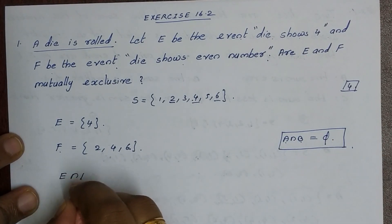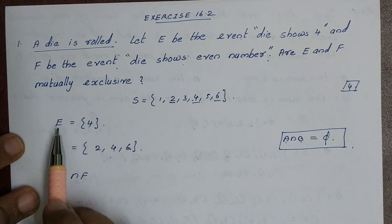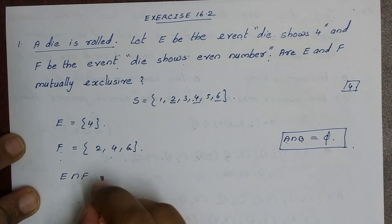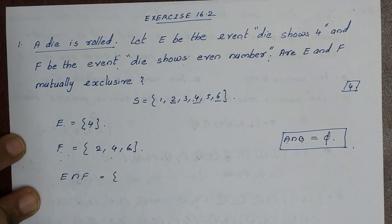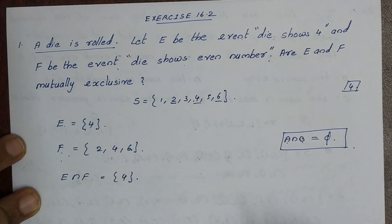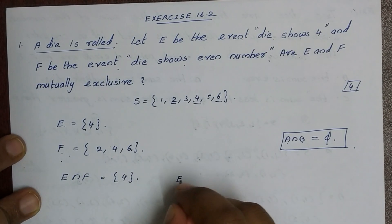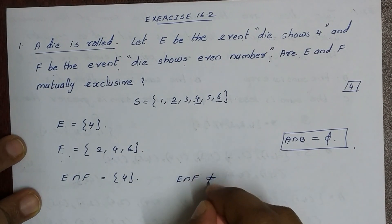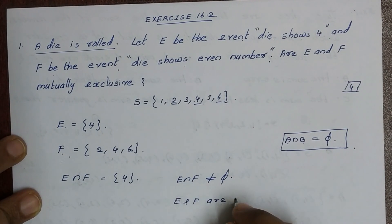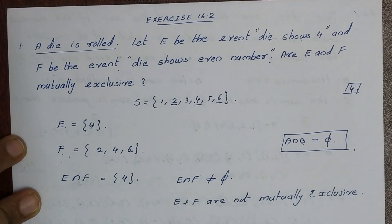Here we check E intersection F. The common element between E = {4} and F = {2, 4, 6} is 4. So E intersection F = {4}, which is not equal to the null set. Therefore, E and F are not mutually exclusive.